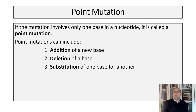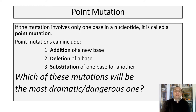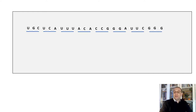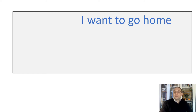Point mutations can include addition of a new base, deletion of a base, or substitution of one base for another. Which of these mutations will be the most dramatic or dangerous ones — addition, deletion, or substitution? As you remember, nucleotides are like letters in the genetic language. Just as we use letters to make words with meanings, the order of the nucleotides on a DNA strand encodes information. They make words that tell the cell how to make each protein. Let's take a look at a simple sentence such as 'I want to go home.'